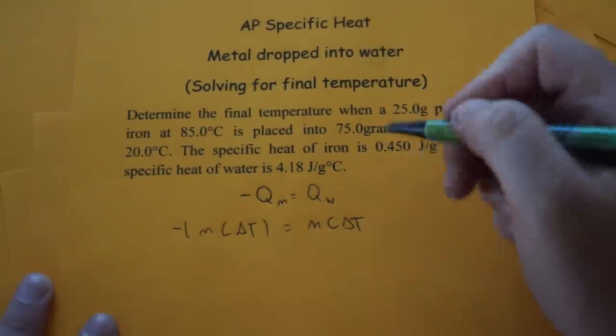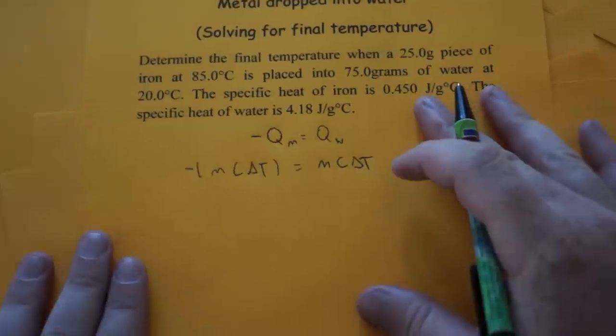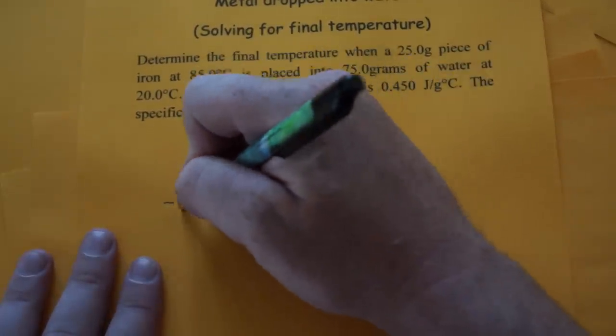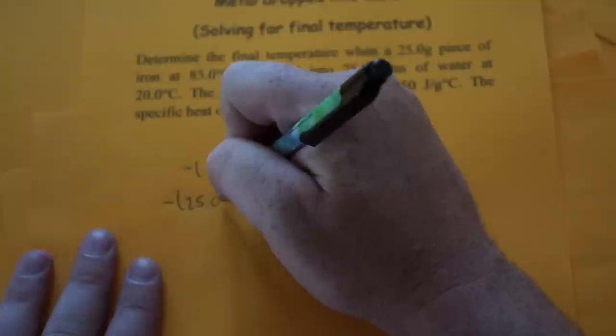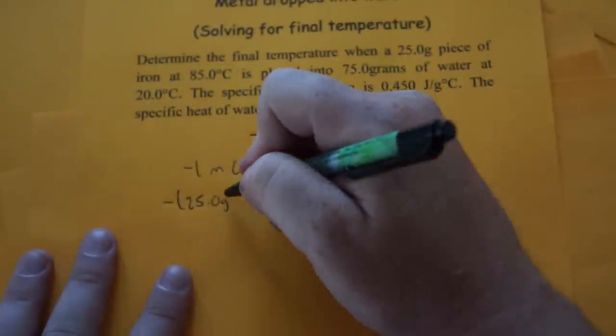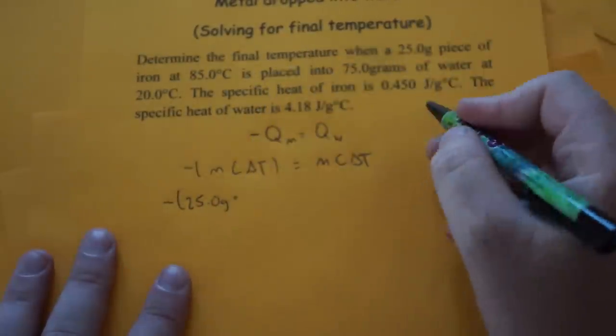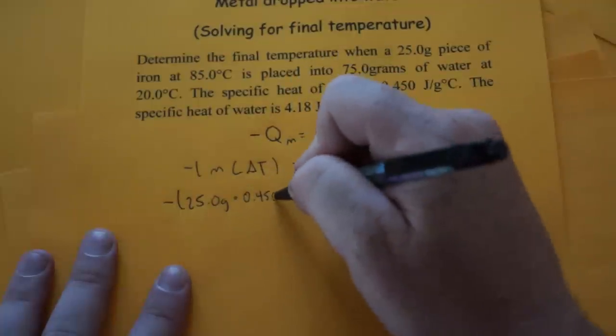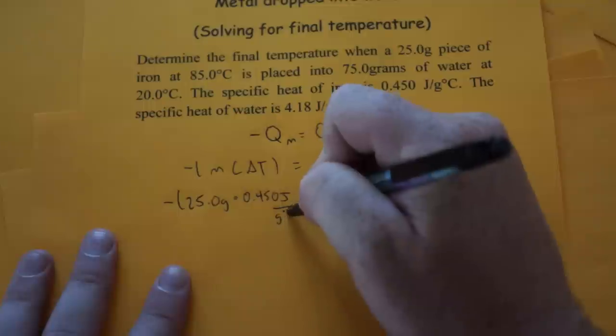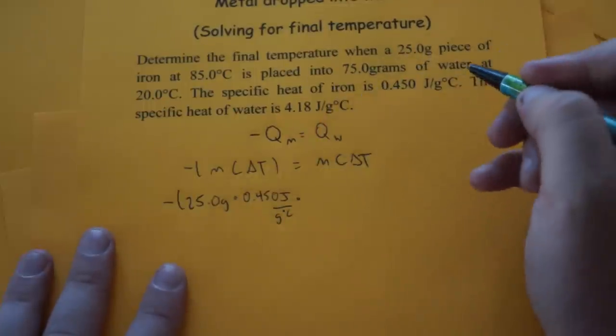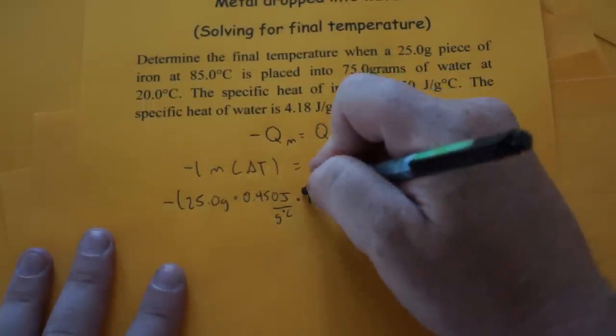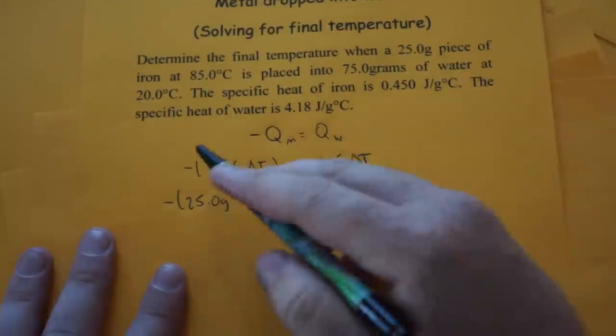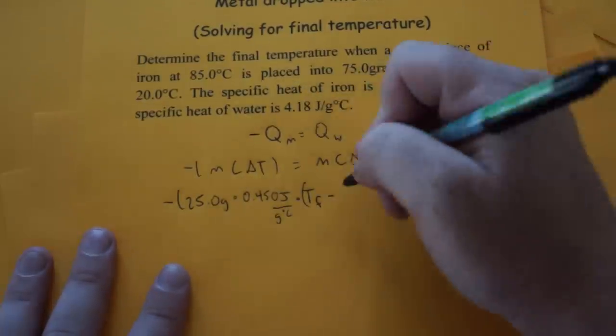Now all we have to do is plug in the numbers. So for the metal, we have a 25 gram piece of metal. The specific heat is 0.45 joules per gram degree Celsius. And our change in temperature is final minus initial. So Tf minus, what's our Ti for the metal, it was 85 degrees.